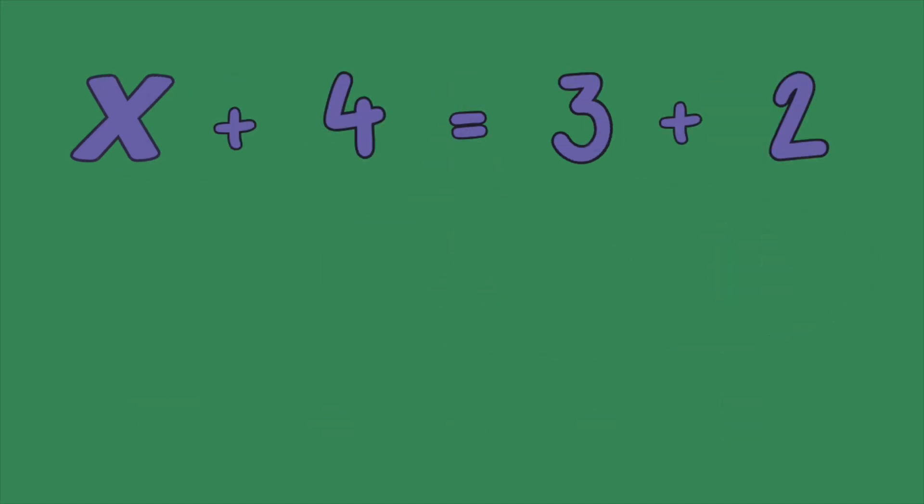Here's another. x plus 4 equals 3 plus 2. Let's solve the right side first because there are no variables. 3 plus 2 equals 5. Now the problem is x plus 4 equals 5.